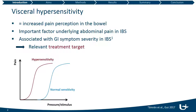In this graph, the pain intensity is shown as a function of the pressure or stimulus intensity. The blue curve represents normal sensitivity, where when the pressure or stimulus intensity increases, the pain increases as well. However, the red curve represents hypersensitivity, showing a shift towards the left, meaning that for the same stimulus intensity these patients will perceive much more pain.